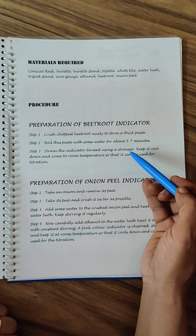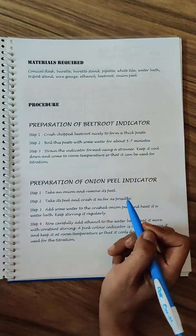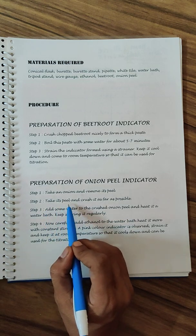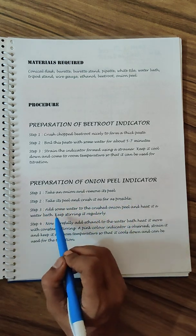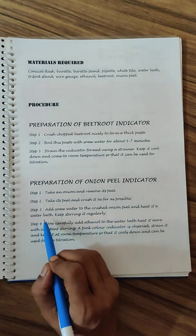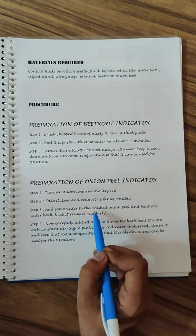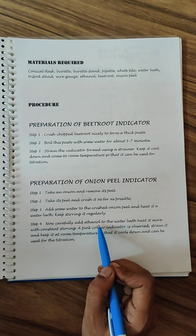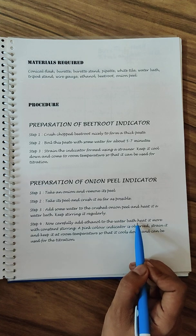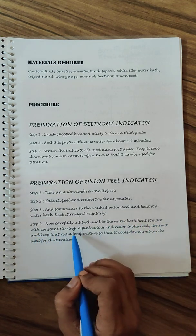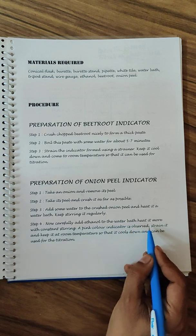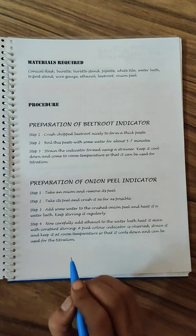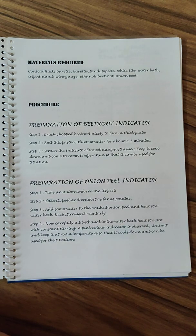Similarly for the onion peels which is acting as an indicator, you will take onion and remove its peels. Take the peels, crush them as far as possible, then add some water to the crushed peels. Heat it in a water bath and keep stirring. At this point you need to add ethanol because onion peel's colored component is not fully soluble in water. Heat it more on the water bath with constant stirring - a pink color indicator is observed.